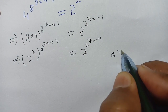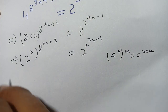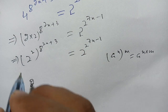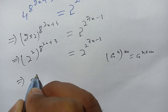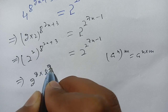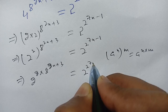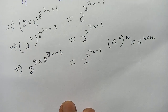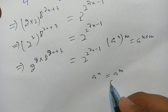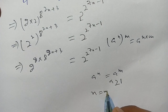We know that a^(n×m) equals (a^n)^m. Applying this rule, we can write the left side as 2^(2 × 8^(2x+3)) equals 2^(2^(7x-1)). We know that if a^n equals a^m and a is greater than or equal to 1, we can compare the powers, meaning n equals m.